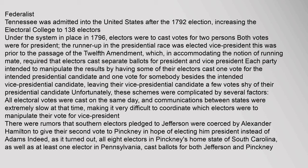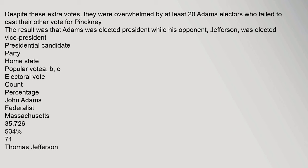There were rumors that Southern electors pledged to Jefferson were coerced by Alexander Hamilton to give their second vote to Pinckney, in hopes of electing him president instead of Adams. Indeed, as it turned out, all eight electors in Pinckney's home state of South Carolina, as well as at least one elector in Pennsylvania, cast ballots for both Jefferson and Pinckney. Despite these extra votes, they were overwhelmed by at least 20 Adams electors who failed to cast their other vote for Pinckney. The result was that Adams was elected president while his opponent, Jefferson, was elected Vice President.